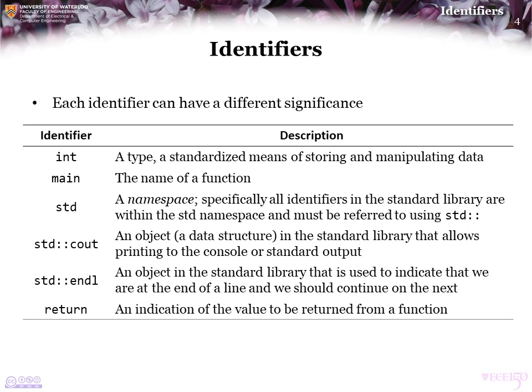Main is the name of the function. Standard is a namespace, and this goes way beyond the scope of this course. Every single identifier within the standard library normally needs to be preceded by std::. Standard cout is an object in the Iostream library that allows you to print. Standard endl is another object in the Iostream library that indicates we are to print an end of line character. Return is a keyword that indicates the next value is to be returned from the function — in this case, main returns 0.